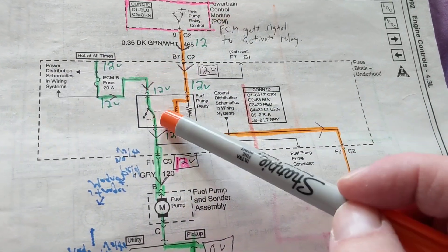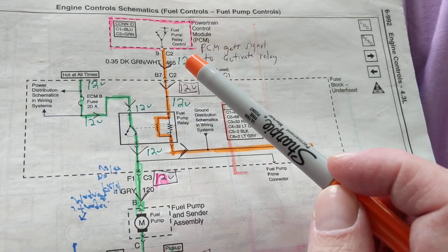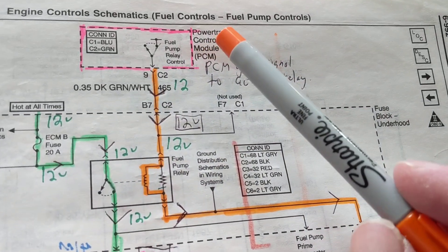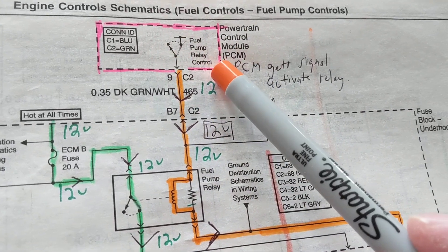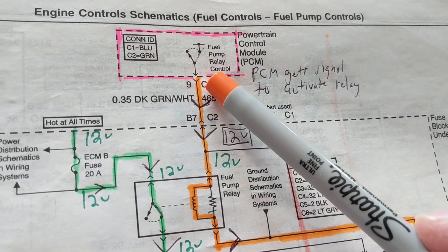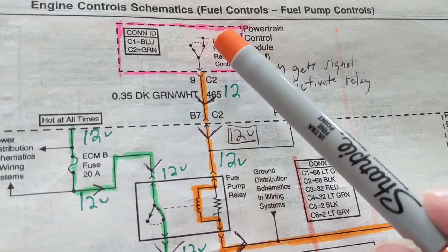But in order for this to happen, this has to happen. This is the difficult part as we spoke about before. Powertrain control module, the computer brain for all of these vehicles. As you see over here, this switch has to be closed.